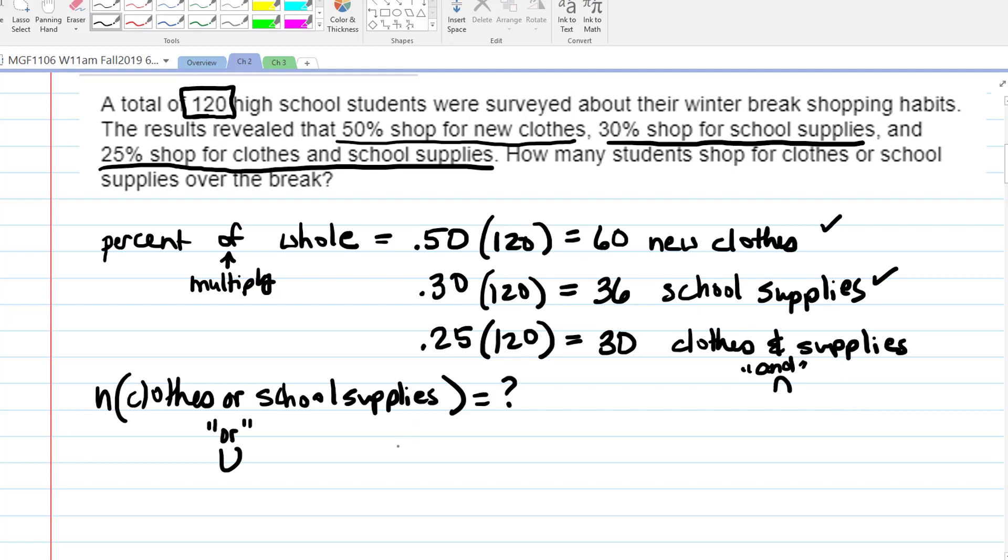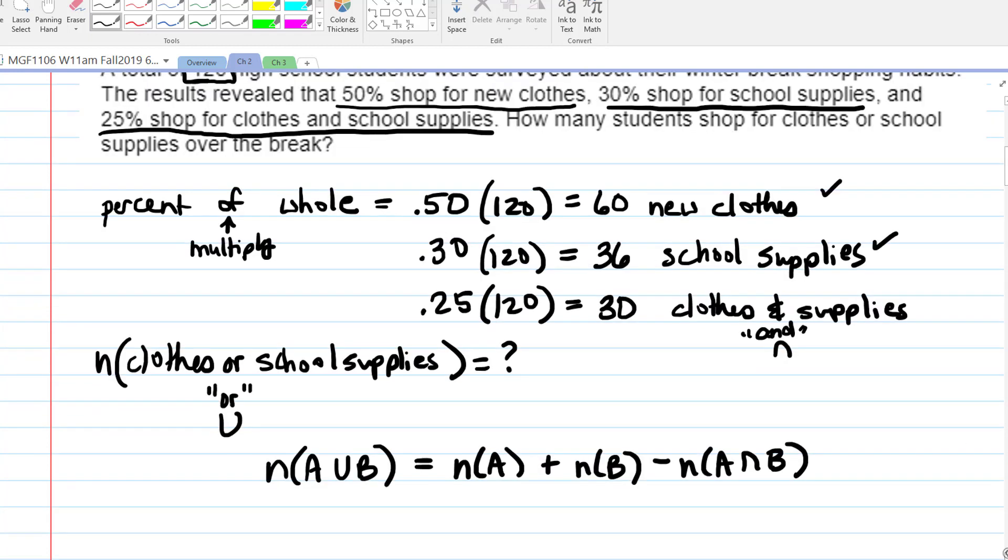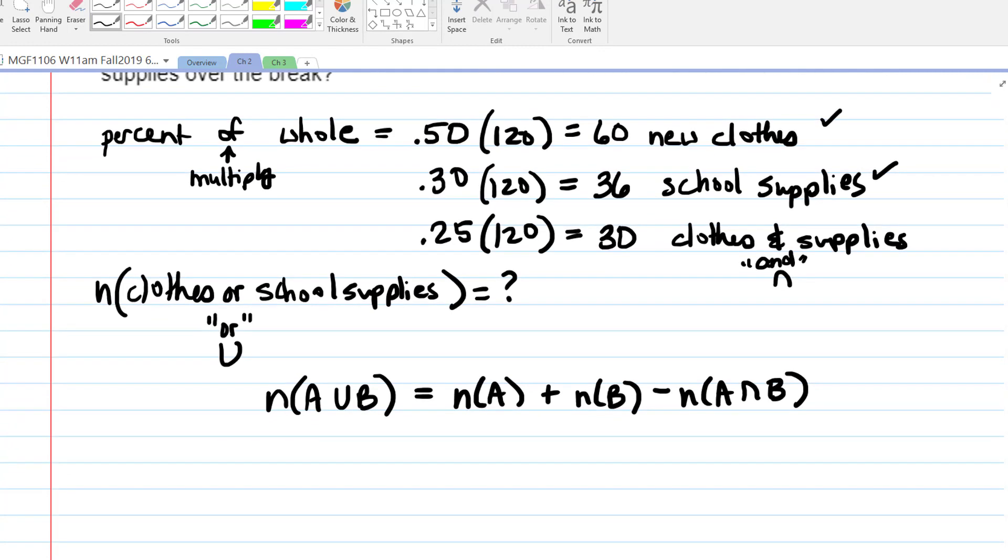So when you're given, you're trying to find the union, and you're given the number in each set plus the intersection, that is exactly the situation: the number in A union B equals the number in A plus the number in B minus the number in A intersect B, minus the overlap. So one way to work this problem is to have memorized that formula, write it out like a formula, replace each piece with its value, and solve for the missing piece. We'll do that first, and then we'll draw a picture, because you might like the picture way better.